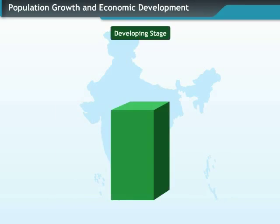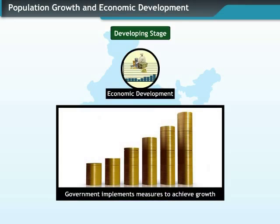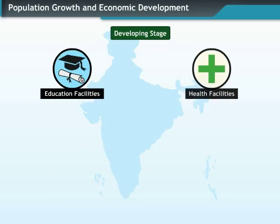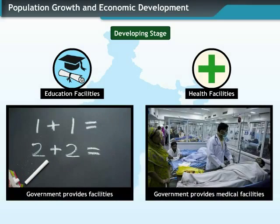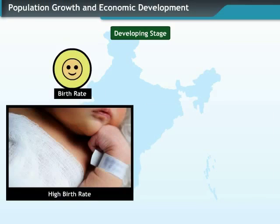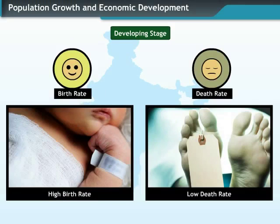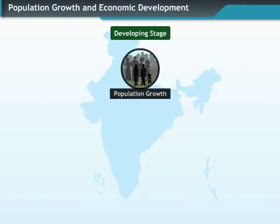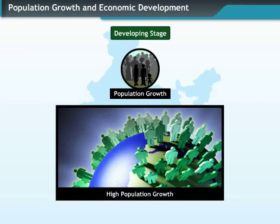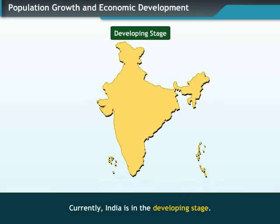In a developing country, the government implements measures for economic growth. Health facilities are made available to the people. The Birth Rate is high while the Death Rate is low. India is in a developing stage.